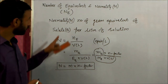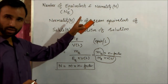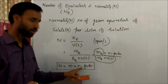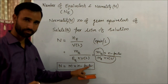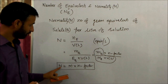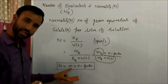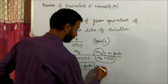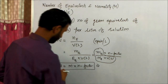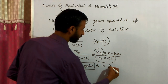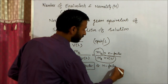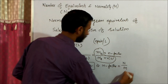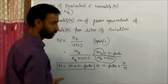So normality is equal to molarity into N factor. Number of equivalents is equal to number of moles into N factor. And normality is equal to molarity into N factor. That means N factor is also equal to normality over molarity.